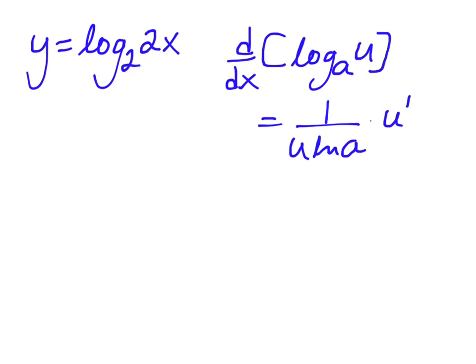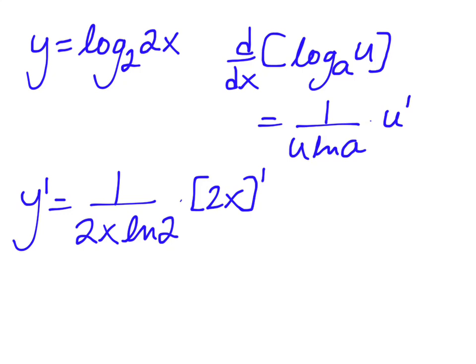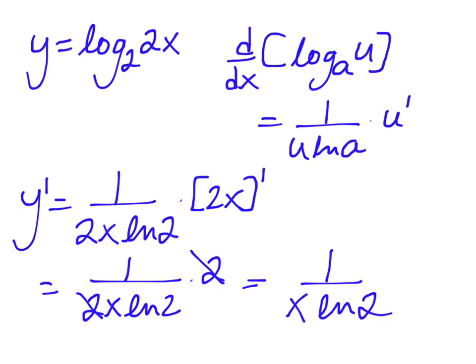So, my y prime is going to be 1 over u, so 1 over 2x ln of 2, because a is my base, times the derivative of 2x. That's my u prime, so that's going to be 1 over 2x ln of 2. Derivative of 2x is just 2. I can cancel this 2 with that 2 and end up with 1 over x ln of 2, just like that.